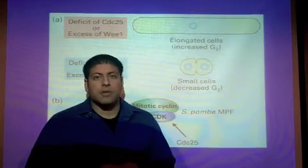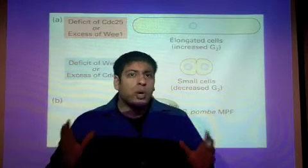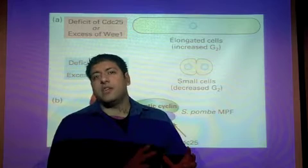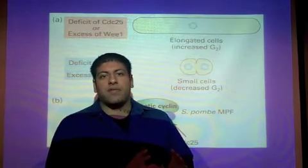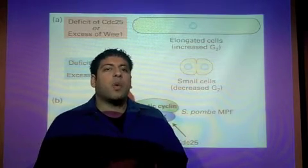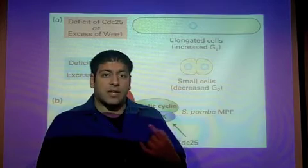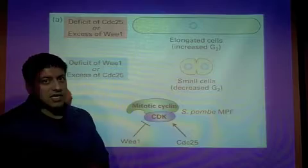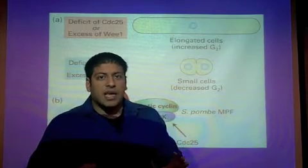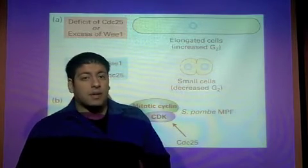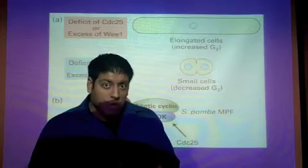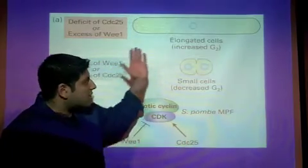What's responsible for that is having an excess of Wee1 and little to no CDC25, a deficit in CDC25. If you have a lot of Wee1, Wee1 is responsible for putting a phosphate on the Y15 of the CDK, which keeps the MPF inactive. CDC25 was responsible for removing that phosphate off Y15 and allowing MPF activity to be active, but we don't have CDC25. So we have a lot of Wee1 which ensures the CDK always has a phosphate on Y15, and because you don't have enough CDC25, that phosphate never gets removed. Therefore you have an inactive MPF and are arrested in the G2 state.